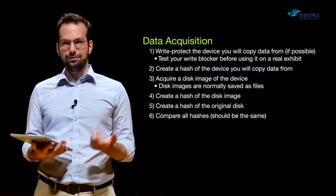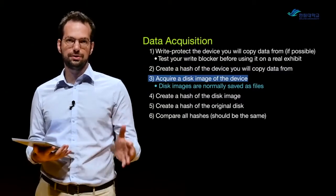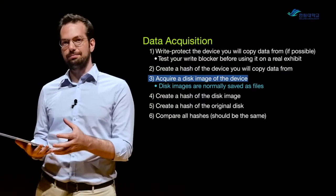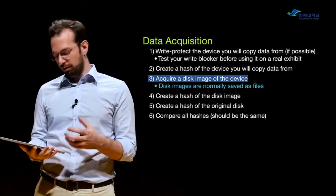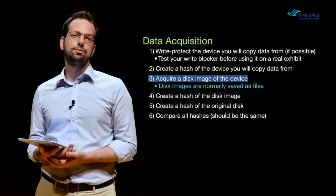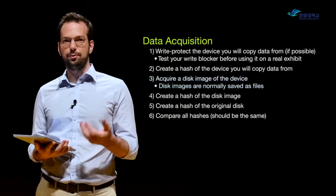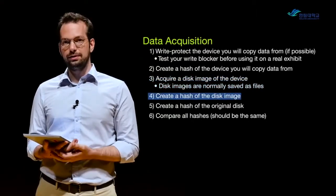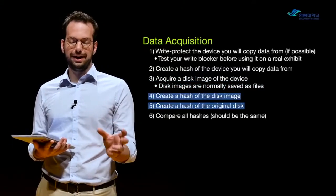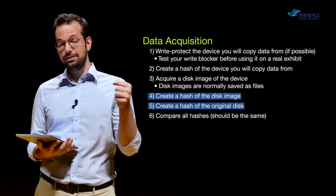Next, acquire the disk image of the device — actually copy the data into a file form or potentially copy it to another hard drive. This is what you will actually use to work with during your investigation. Once you've made a copy of the suspect's data, either in a file format or copied to another hard drive, we want to create hashes for the copy of the data and the original again, to ensure that our copy is exactly the same as the original.